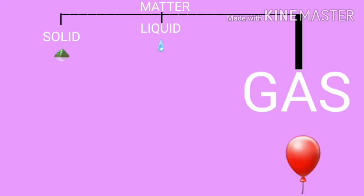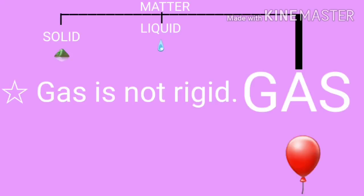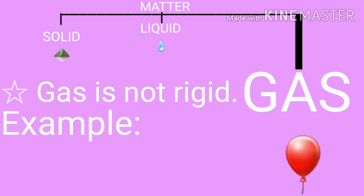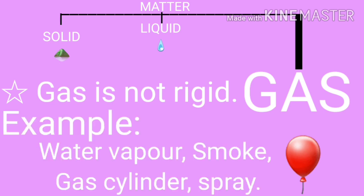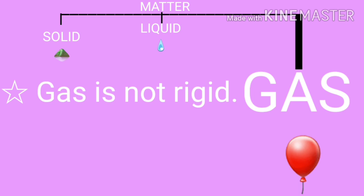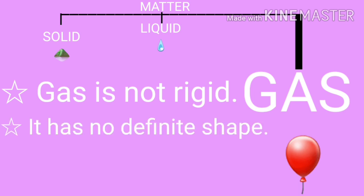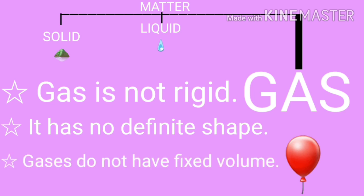Next one, gas. Gas is not rigid. For example, water vapor, smoke, gas cylinder, spray — these are some examples of gas. It has no definite shape. Gases do not have fixed volume.